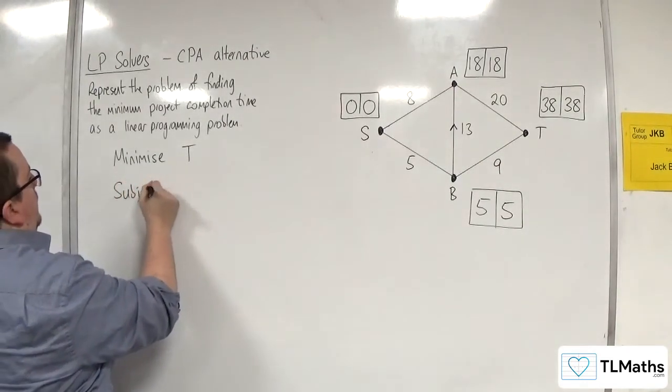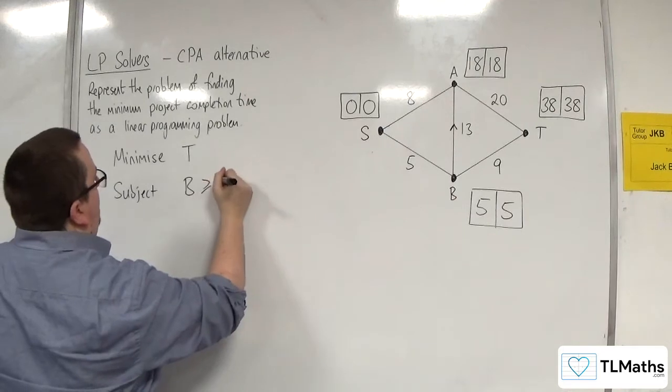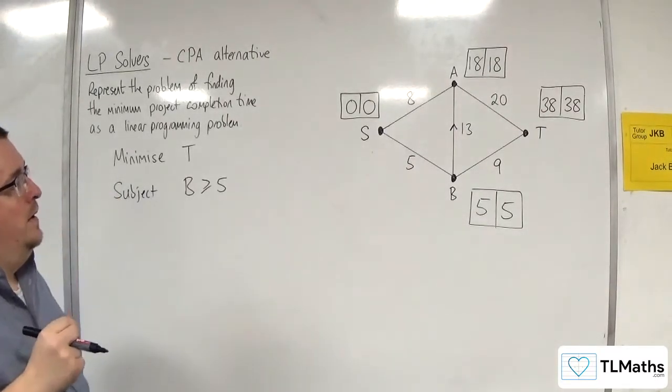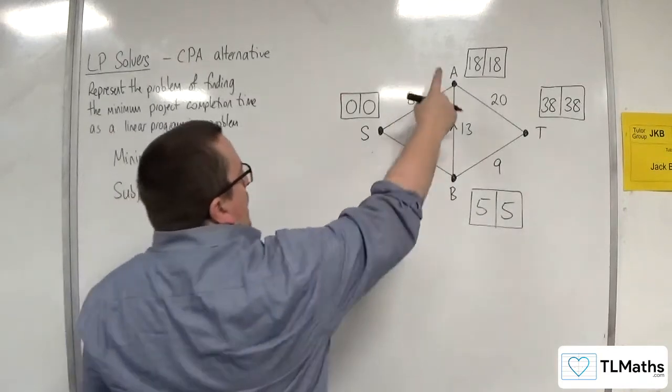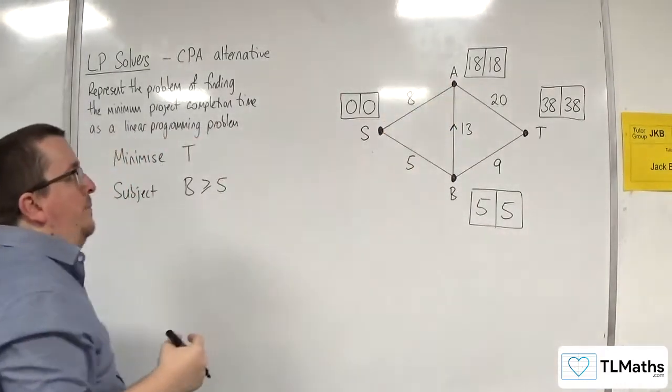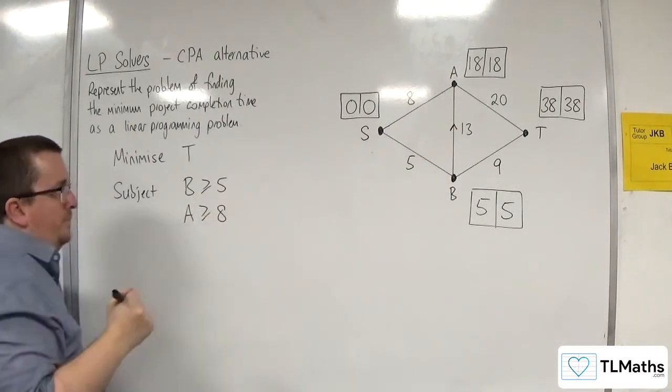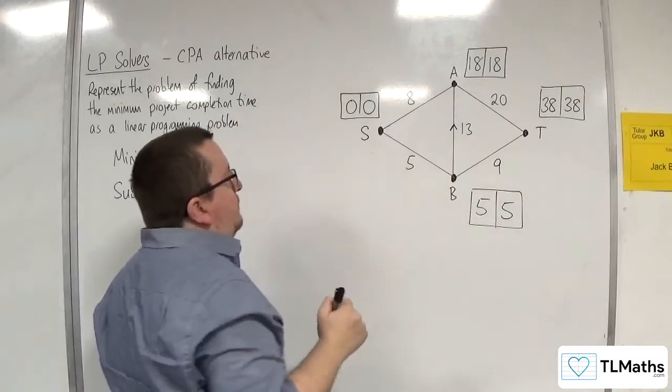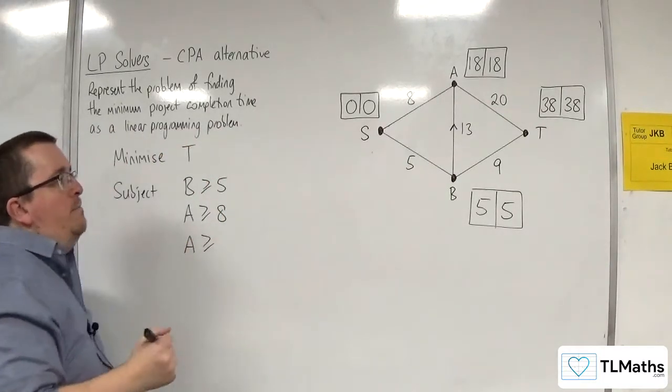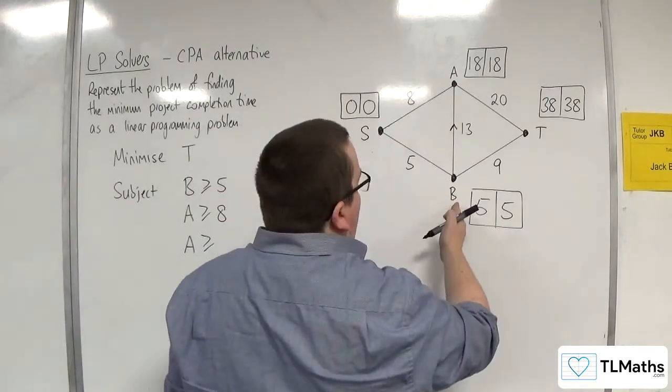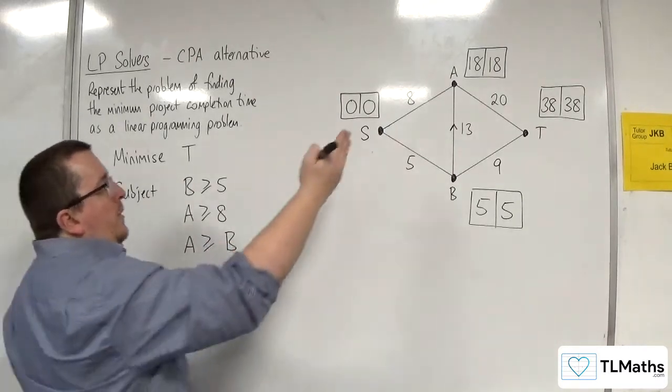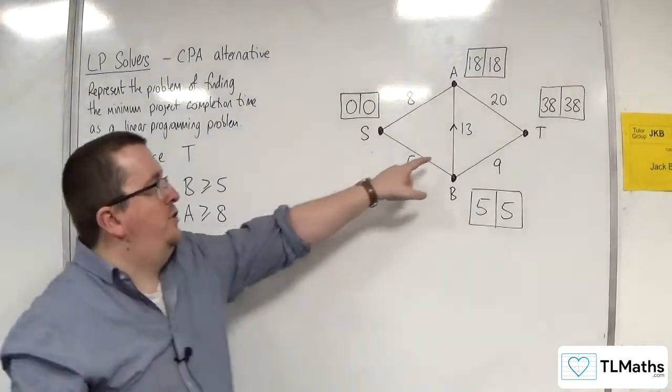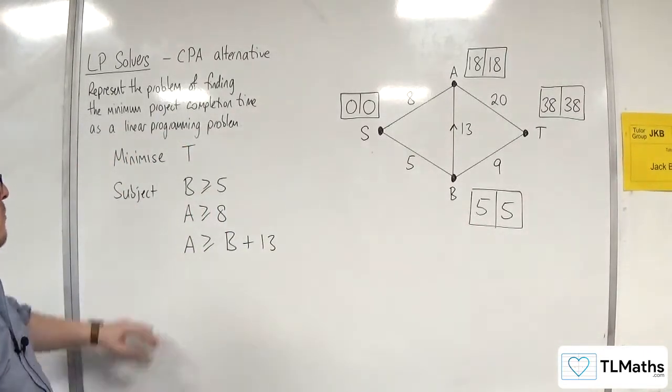So subject to, the value at B has got to be at least 5. We're going to use greater than or equal to inequalities here. Now for A, because we've got this event that takes 8 hours, A needs to be at least 8 in order for that job to be completed. But A also depends on B. So we can also write down that A must be at least whatever the value is at B plus 13. So whatever the value is at B, I need another 13 hours to complete this job in order to get to event A. So I can write down that inequality there.